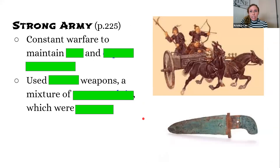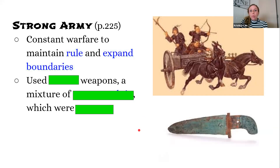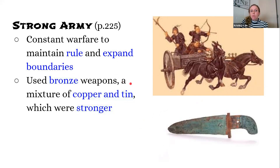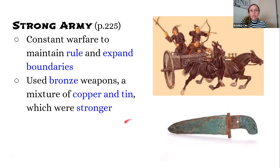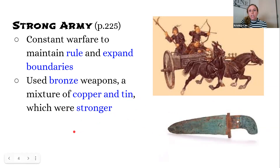They had a very strong army during the Shang Dynasty due to constant warfare used to maintain their rule and expand their boundaries. You can see in this picture soldiers fighting in a chariot with archers, horses, and other weapons. They used bronze weapons during this time period. Bronze is a mixture of copper and tin — stronger than the copper-alone weapons they had before. Whoever has the strongest weapons wins in battle, so having the best weapons technology was very important.